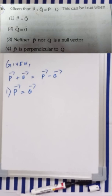We have this question: given that p vector plus q vector is equal to p vector minus q vector, this can be true when — first option: p is equal to q vector; second option: q vector is a null vector; third option: neither p vector nor q vector is a null vector; and the fourth option: